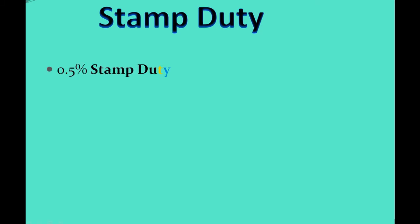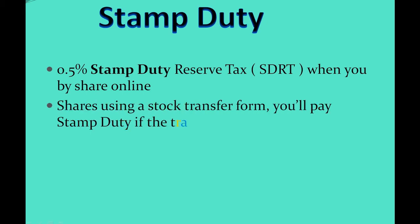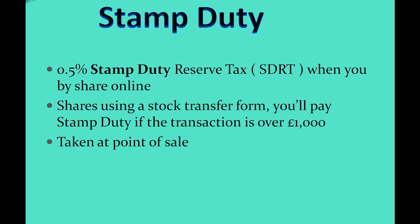So first off, we'll be having a look at stamp duty. You pay 0.5% tax when you buy shares online. And if you buy using a transfer form, you only pay stamp duty tax for transactions over £1,000. All taxes are taken at the point of sale.